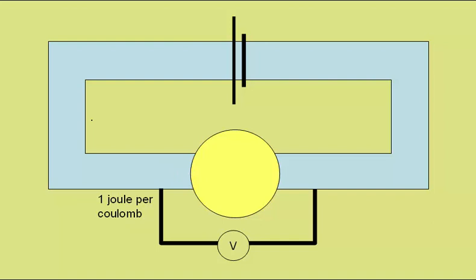The charge then passes its energy to the lamp. The voltmeter again notes how much energy the charge has: now zero joules of energy per coulomb of charge.